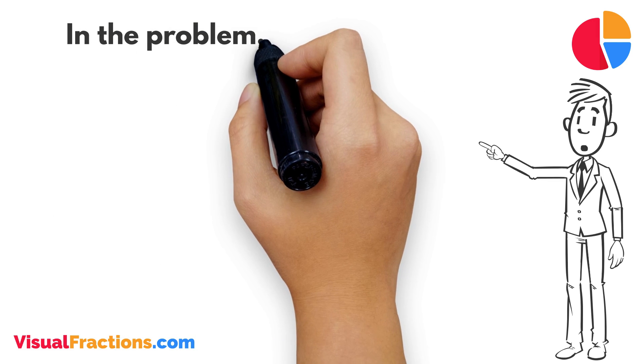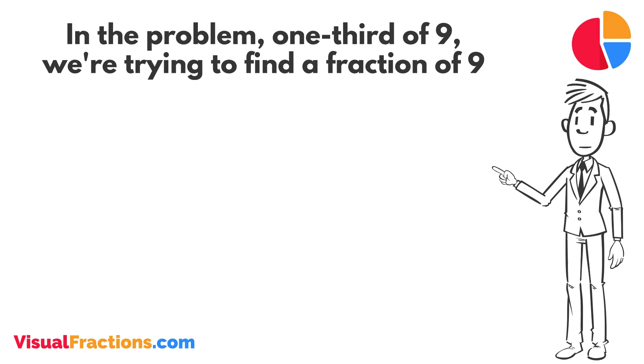In the problem, one-third of nine, we're trying to find a fraction of nine. Since we're only taking a part of it, we know our answer will be less than nine.